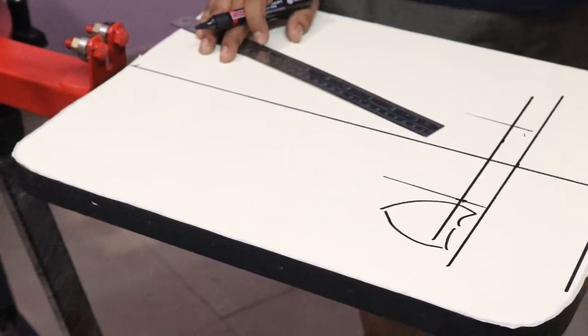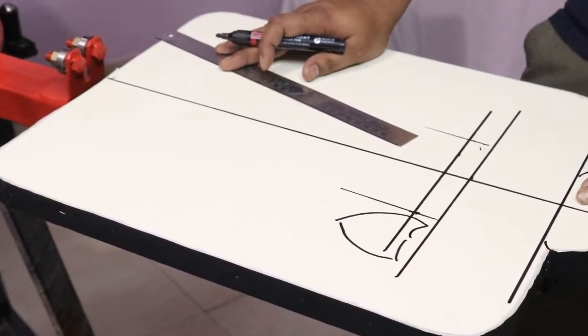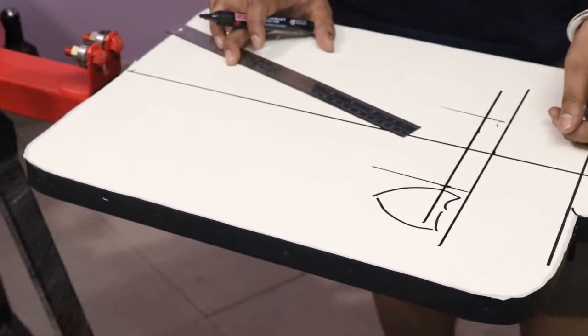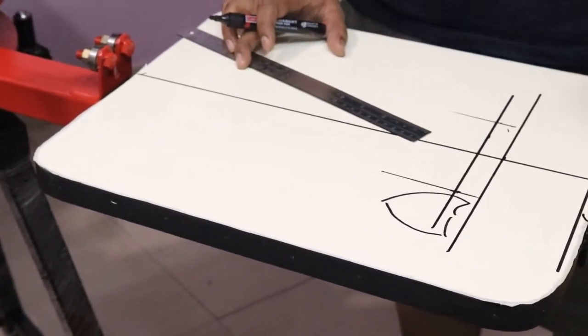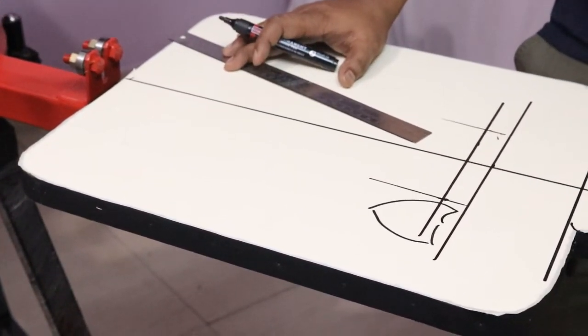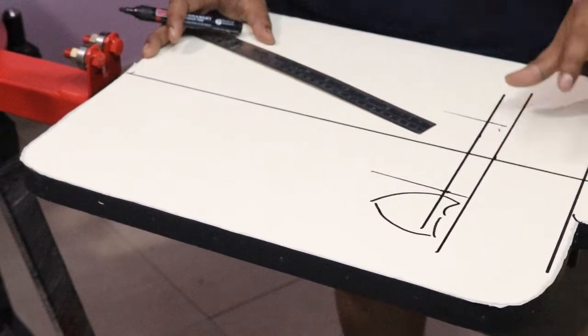So always remember to do the marking, otherwise you have to do again and again the same thing. You have to take out your t-shirt and see that it is coming in the exact line or not. So it's always advisable to do your marking before you start the printing.